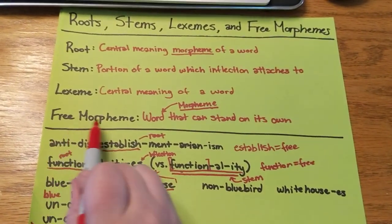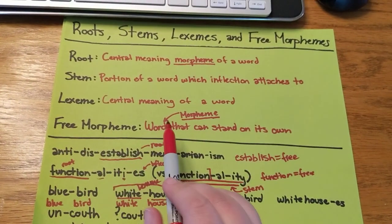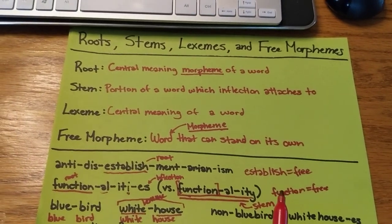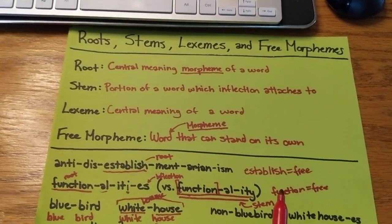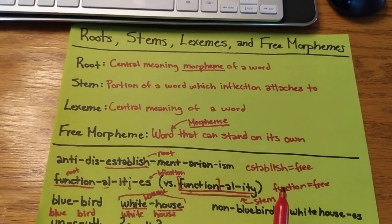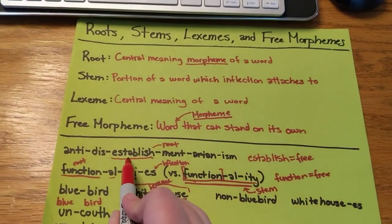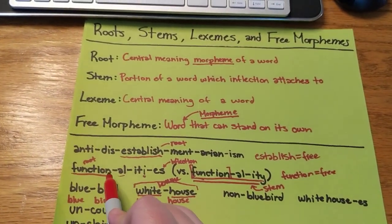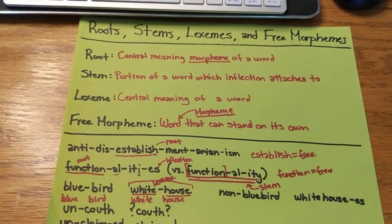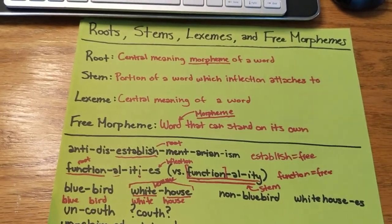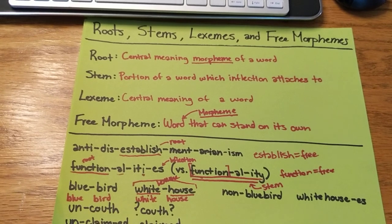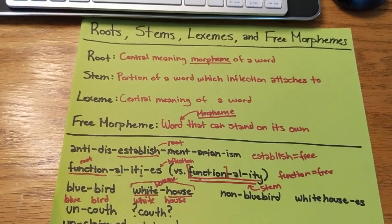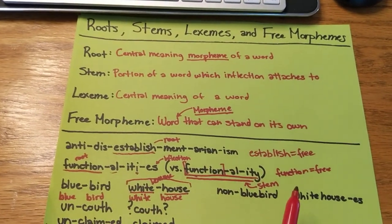The last thing to distinguish is a free morpheme, which is a morpheme that can stand on its own. It's really tempting to conflate this with a root because most roots in English are also free morphemes — establish, function, run, walk, dance, dog, sweep. These are all things you can use as free morphemes.